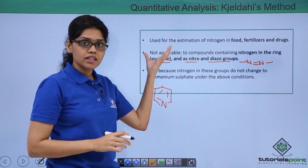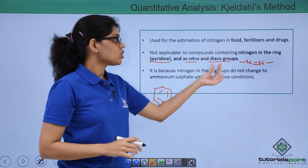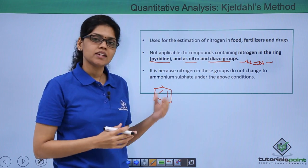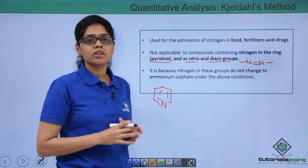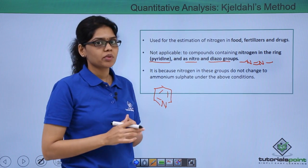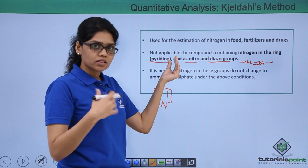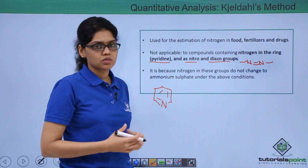That is mainly because under these conditions, nitrogen does not get converted to ammonium sulphate in these groups. That is primarily why Kjeldahl's method will not be applicable for compounds in which nitrogen is present as pyridine in the ring form or nitro or diazo group.